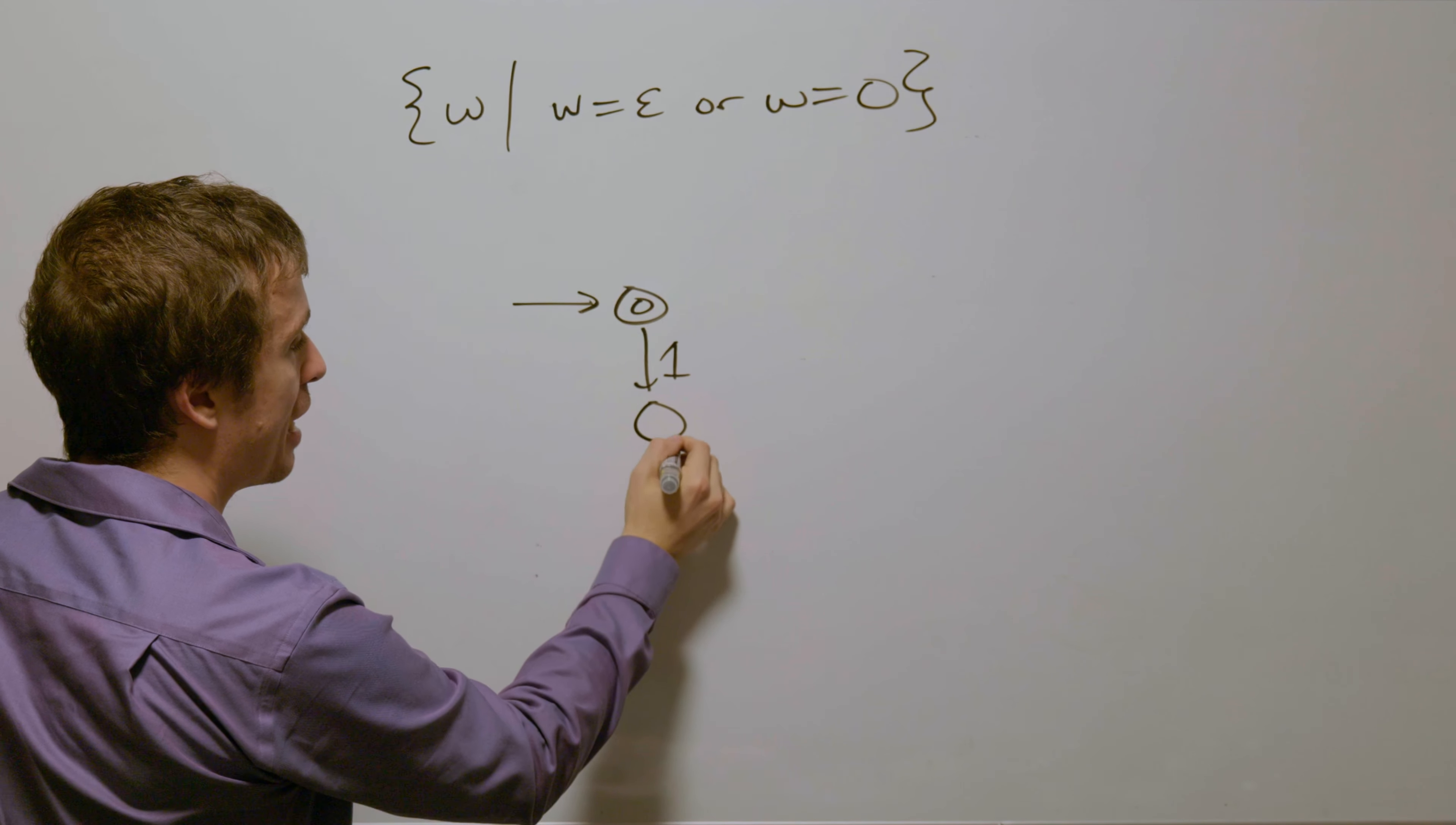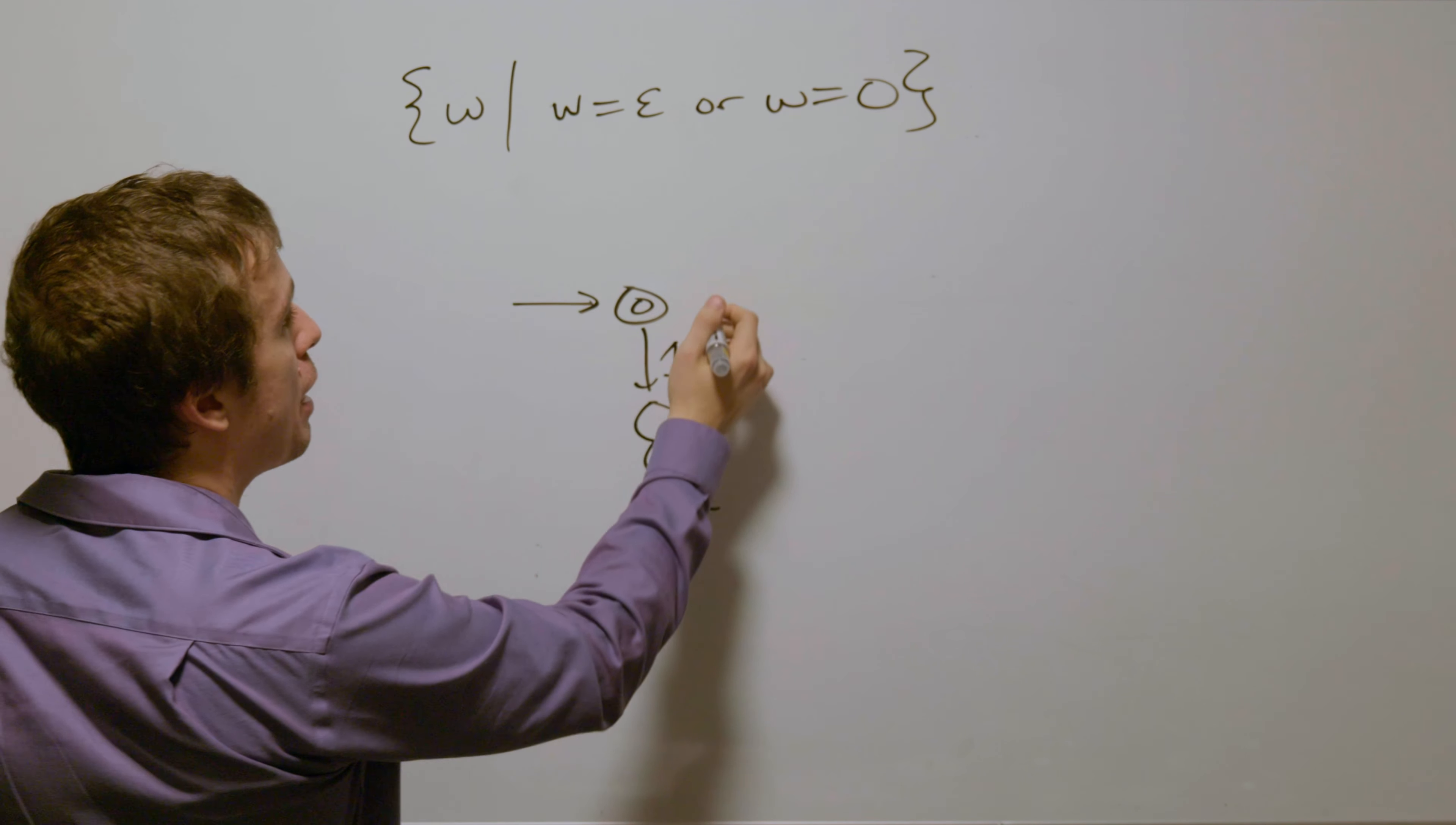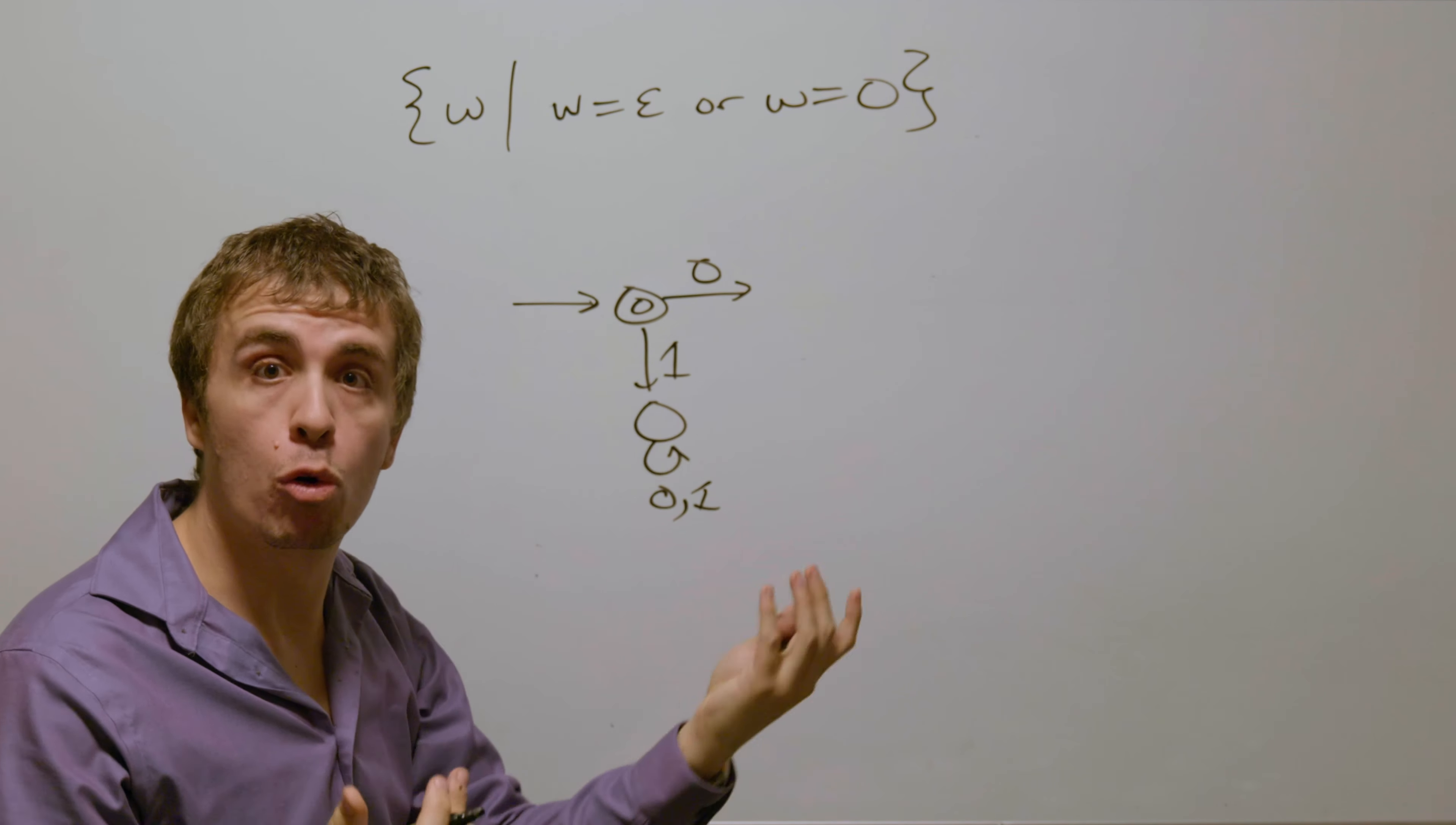So I'm going to go to a dead state right here, which just reads through the rest of the characters and never accepts. If we read a zero, according to this, if we read exactly one zero, we're going to accept.